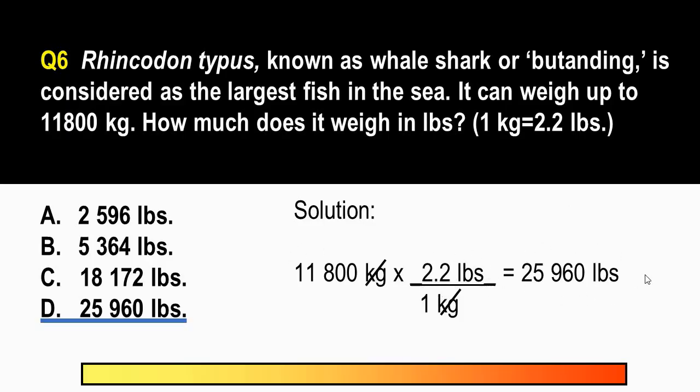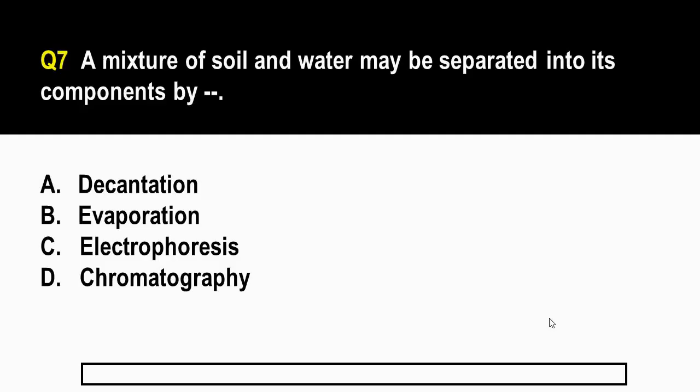So for question number seven, a mixture of soil and water may be separated into its components by A, decantation, B, evaporation, C, electrophoresis, and letter D, chromatography.